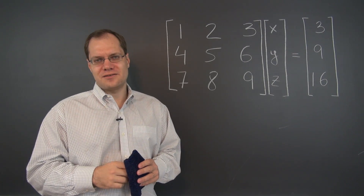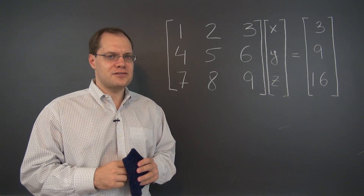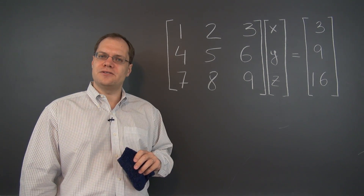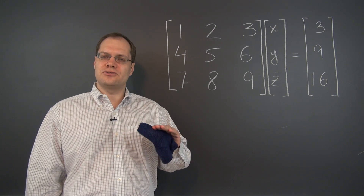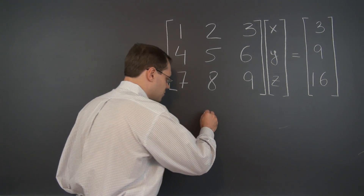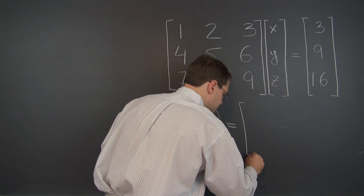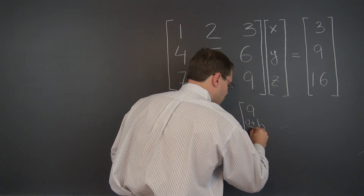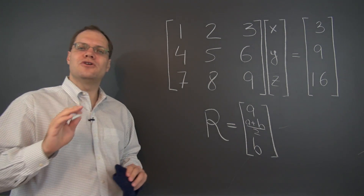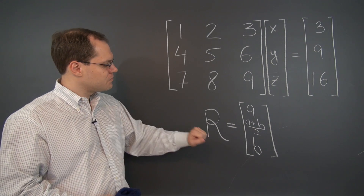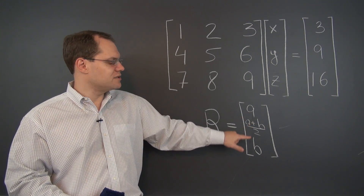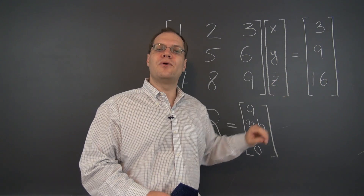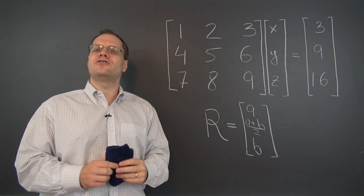Let's now solve this linear system, which we a priori know doesn't have a solution. As we discussed in previous lessons, the column space of this matrix has the property that the middle entry is the average of the other two. In other words, the column space has the form A, B, and in the middle, (A+B)/2. The vector on the right-hand side does not have this property, so it is not in the column space of this matrix, and therefore there are no solutions.